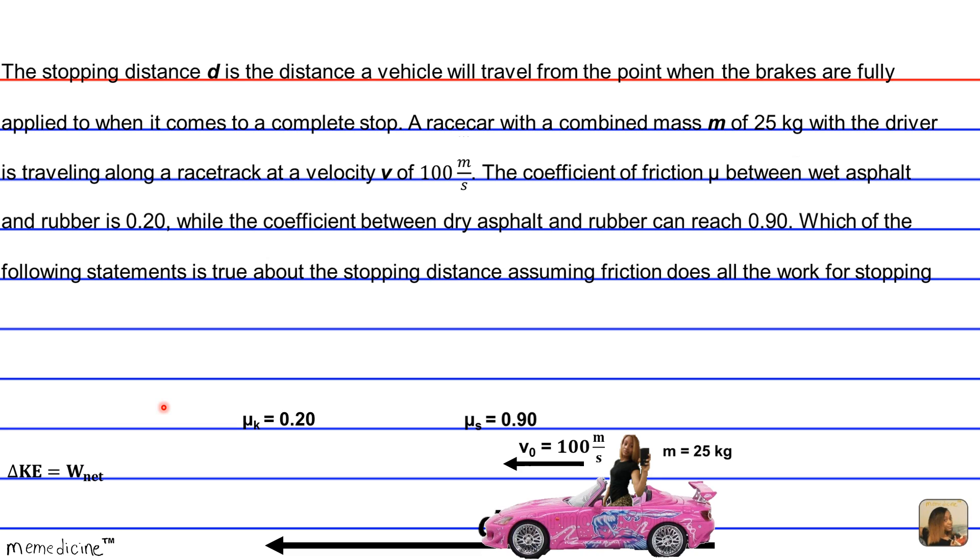All right, so these are our coefficients of kinetic and static friction, and this is our work-kinetic energy theorem. A change in kinetic energy is equal to W_net, where W_net stands for the net work. And for those of you who watched my previous flashcard decks, you would know that the friction force is calculated by multiplying the coefficient of friction times the normal force.